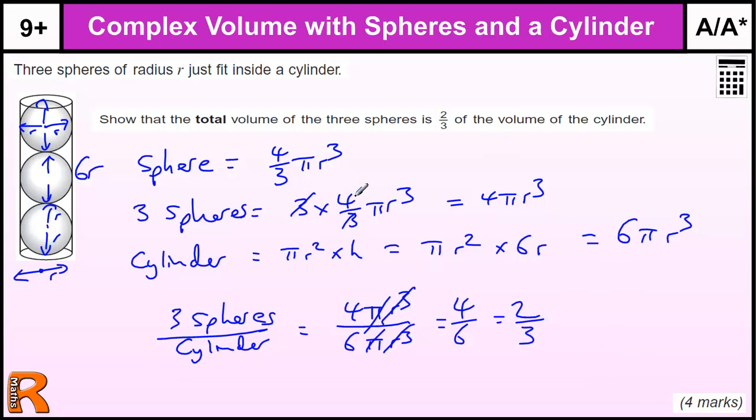We get a mark for writing down the formula for three spheres. You get a mark for writing down the formula for the cylinder with the 6R in. You get a mark for dividing one by the other, and a mark for showing that it goes to two-thirds.